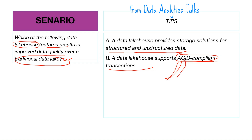Isolation means transactions operate independently, ensuring that concurrent transactions do not interfere with each other — even if running concurrently, it appears sequential. Durability means once a transaction is committed, it remains permanent even in case of system failure. When ACID-compliant transactions are happening, the database will have better data quality.